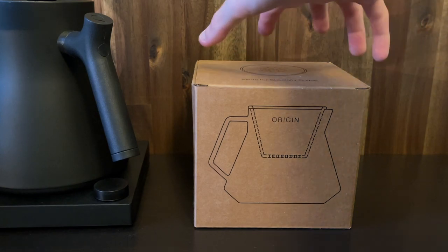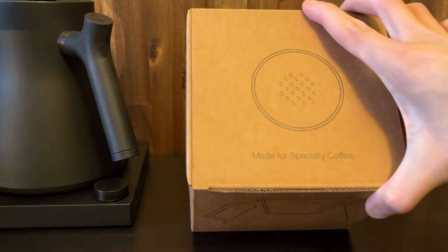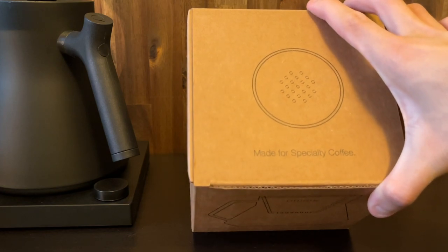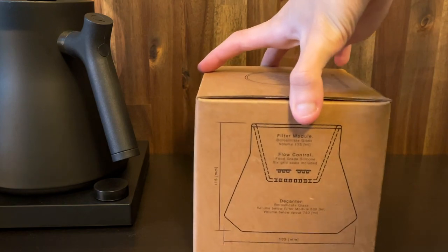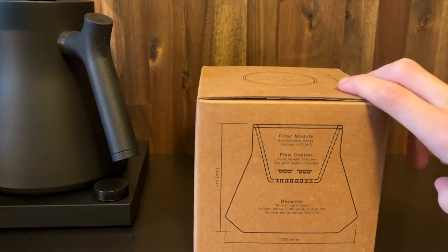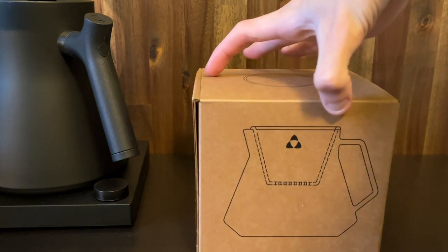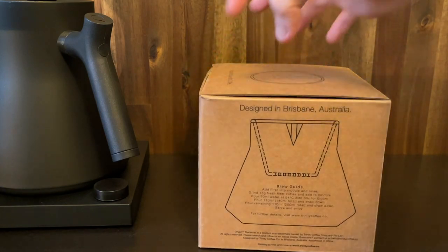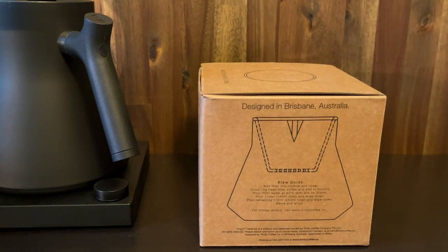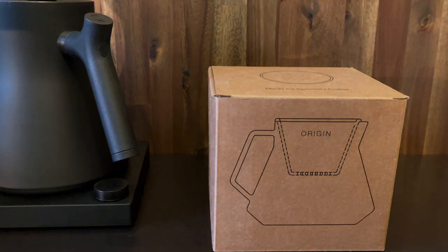Great, so on the outside of the box we've got a little diagram at the top, another little picture of the dripper, made for specialty coffee. We've got some more information about the filter module and how to control the flow rate. It's also got the little logo up here and designed in Brisbane Australia, always good to see.